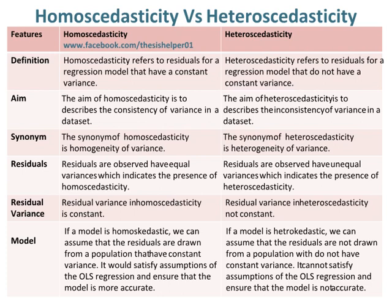Residuals observed to have equal variances indicate the presence of homoscedasticity. Whereas, residuals observed to have unequal variances indicate the presence of heteroscedasticity.